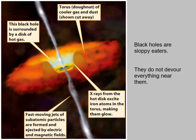You have to look at it from the right angle. If you look directly edge-on, the stuff spiraling in the accretion disk blocks your view. But from the right angle you'll see X-rays coming from that accretion disk or from the jet being spewed outwards.